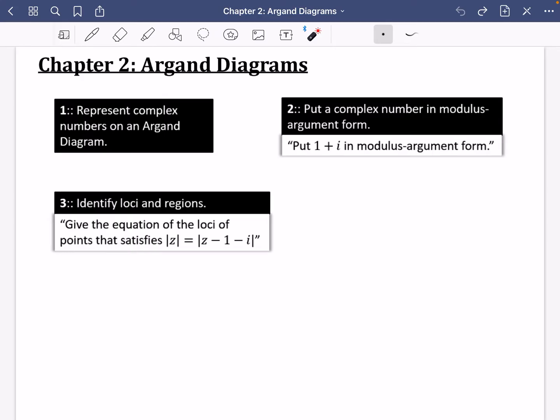So we're going to learn about how we put these complex numbers in a particular form, which is called the modulus argument form. And the most interesting part of this chapter is going to be about loci and regions. And all of this is going to make a lot more sense when we proceed with this.